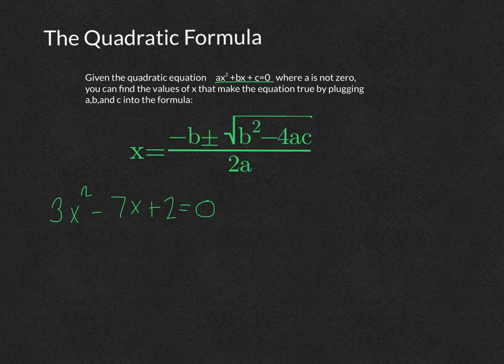Let's say I have this equation, 3x squared minus 7x plus 2, and I want to figure out the values that make the values for x. I'm solving for x.